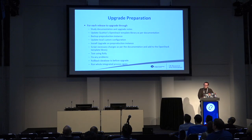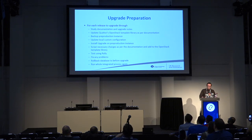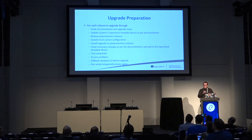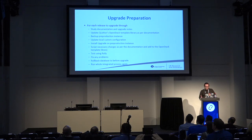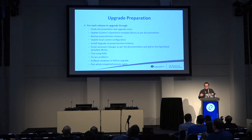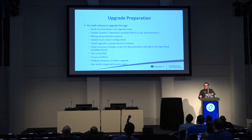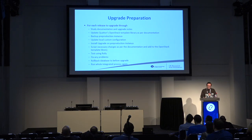In preparing for this, because we run Quattor — which for most intents and purposes can be considered an in-house tool with a relatively small number of users, and we are primary developers of the OpenStack part of it — we started by studying the documentation, updating Quattor's template libraries and configuration. Then we backed up our pre-production instance, updated the local configuration, scripted any necessary changes, tested using Rally to check if everything works, fixed any problems, put fixes back upstream if necessary, backed up the database before starting the upgrade, and then went through it again automated. We did that for each upgrade going from Mitaka through Newton, Ocata, Pike, and finally to Queens.